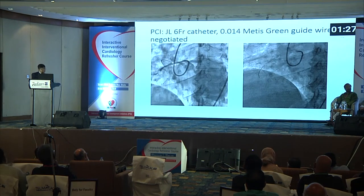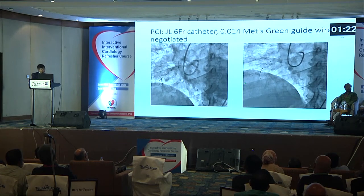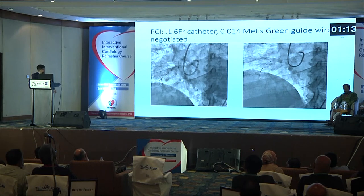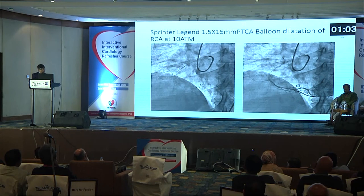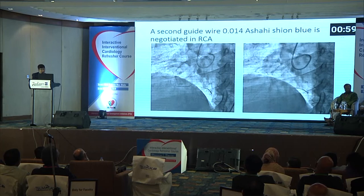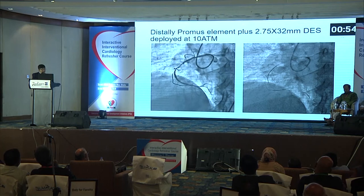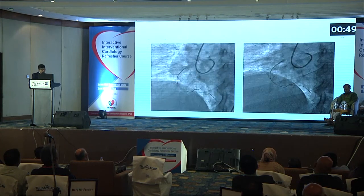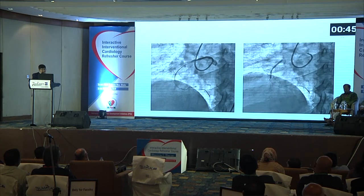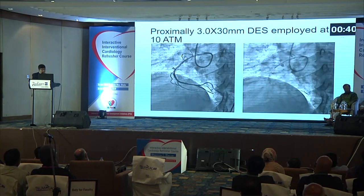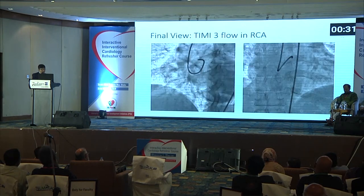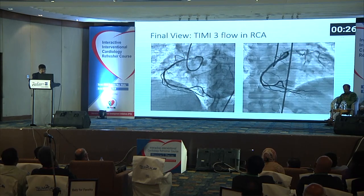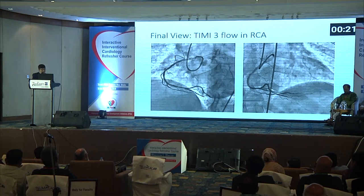For this case, I chose a JL 6-French guide catheter, which was cannulated to the upper part. As the RCA arose from the upper part of the left coronary sinus, I used this JL 6-French guide catheter. A metastasis wire was passed, and subsequent angioplasty was done after predilatation with a PCI balloon and placement of one stent distally and another proximally, overlapping the second stent. Post-dilatation was done with an NC balloon, and the final view showed a normal RCA with TIMI flow achieved.